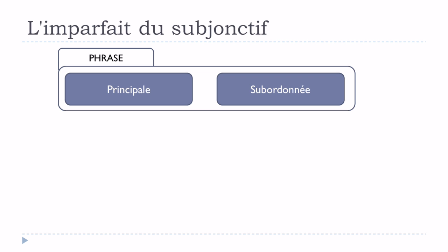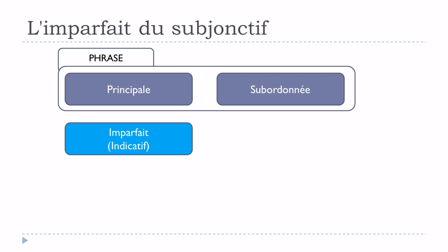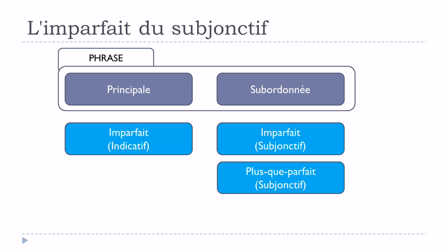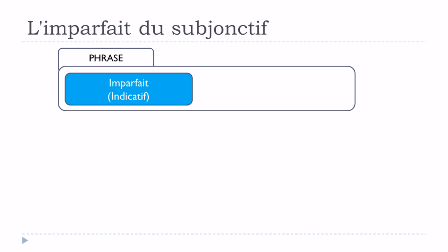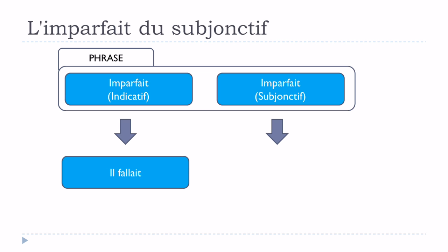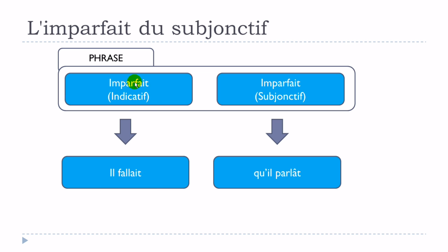Now let's imagine a sentence with la principale and une subordonnée. If we have l'imparfait de l'indicatif in la principale, then normally we should put l'imparfait du subjonctif or le plus-que-parfait du subjonctif in la subordonnée. For example: il fallait qu'il parlât — here il fallait is l'imparfait de l'indicatif, and qu'il parlât is l'imparfait du subjonctif.